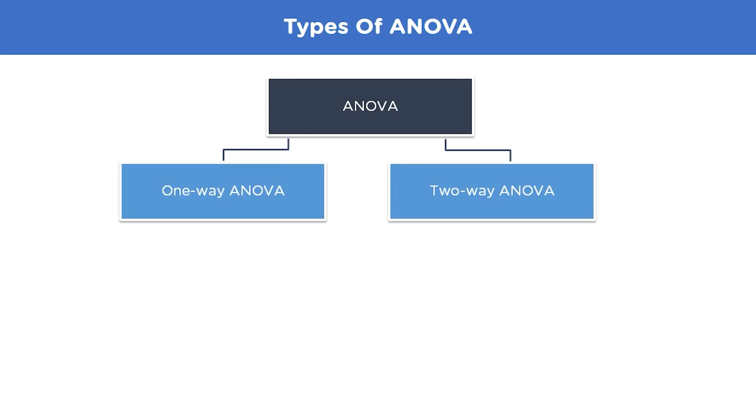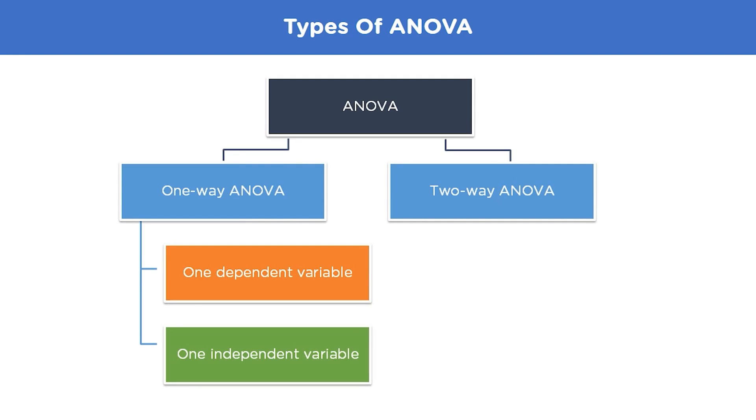There are basically two types of ANOVA, which is a one-way ANOVA and a two-way ANOVA. When we are comparing more than three groups based on one factor variable, then it is said to be a one-way analysis of variance.